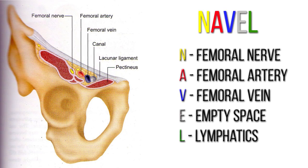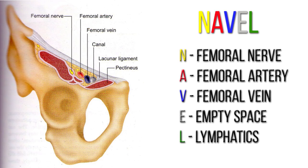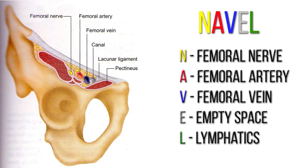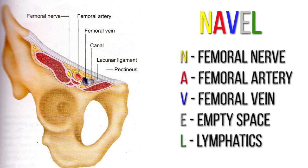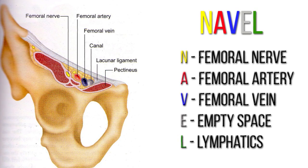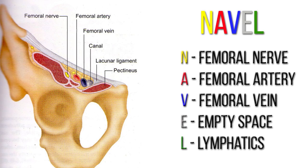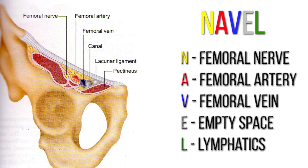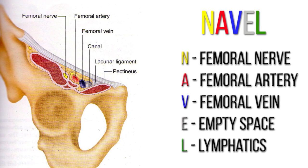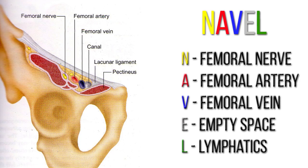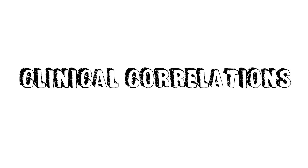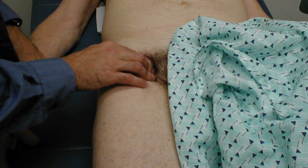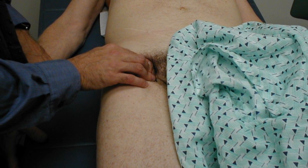The contents of the femoral triangle from lateral to medial can be remembered using the acronym NAVEL. N stands for nerve, which is the femoral nerve; A for artery, which is the femoral artery; V for vein, which is the femoral vein; E for empty space; and L for lymph, which includes the deep inguinal lymph nodes and associated lymphatic vessels.